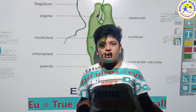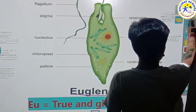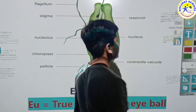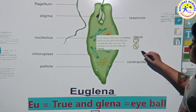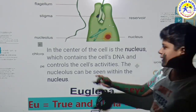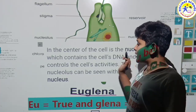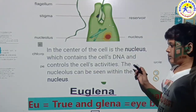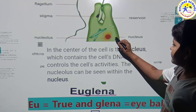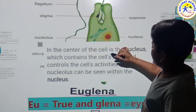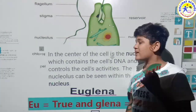Let's start our introduction to the parts of Euglena. First of all we are going to see about the nucleus. In the centre of the cell is the nucleus, which contains the cell's DNA and controls the cell's activity. The nucleolus can also be seen within the nucleus. You can see here that in the centre, this is the Euglena and in the centre there is the red coloured part — that is the nucleus.